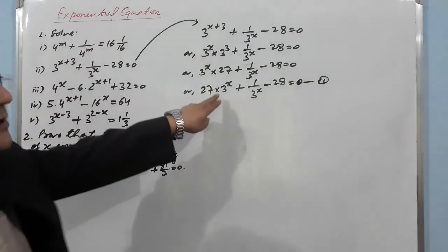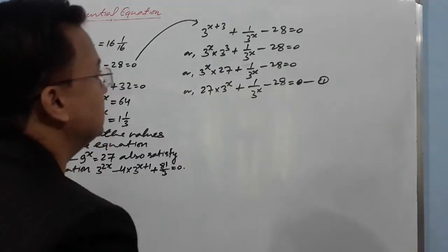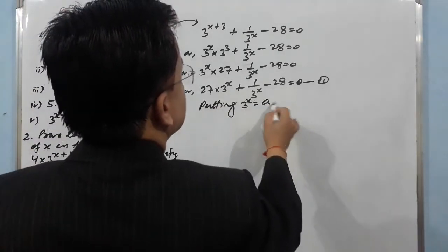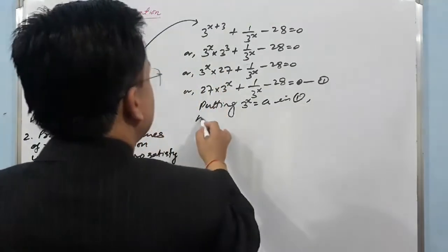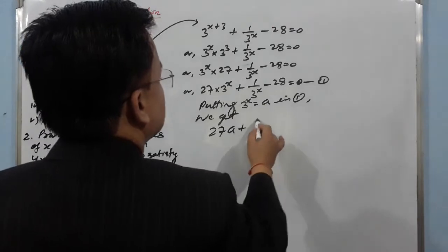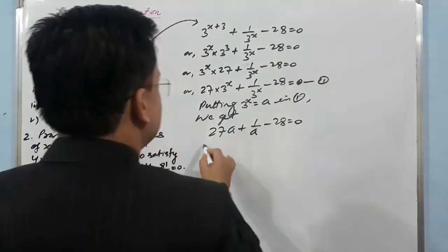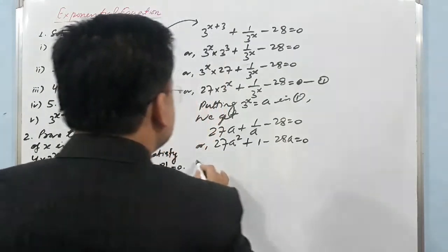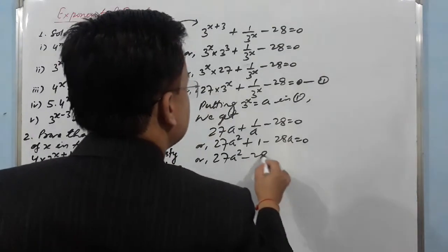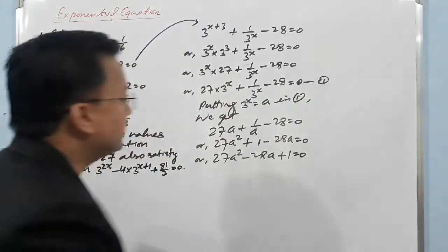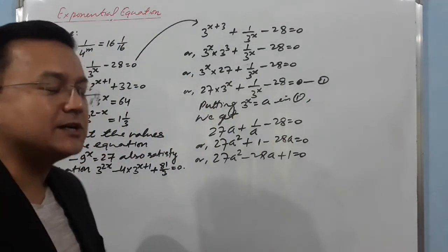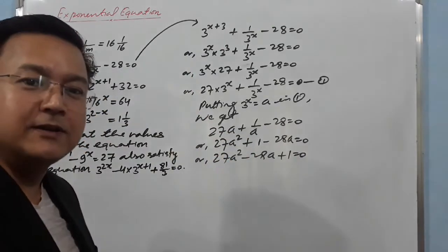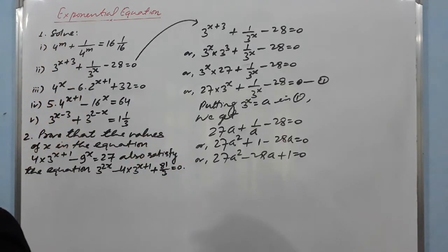Now we can substitute: putting 3^x = a, we get 27a + 1/a − 28 = 0. Multiplying through, we get 27a² − 28a + 1 = 0. The remaining steps follow exactly the same method as the first question — factorize by splitting the middle term to find the values of x.